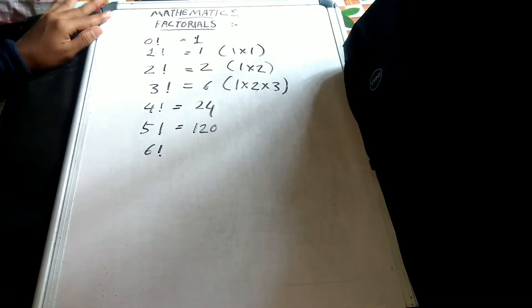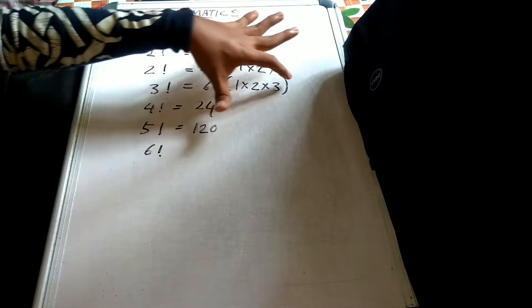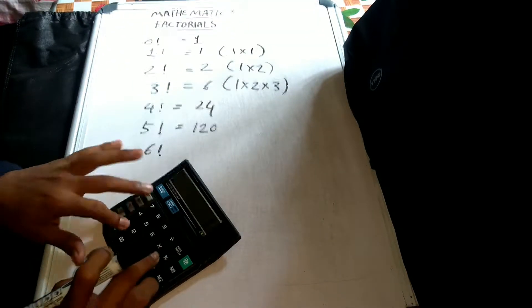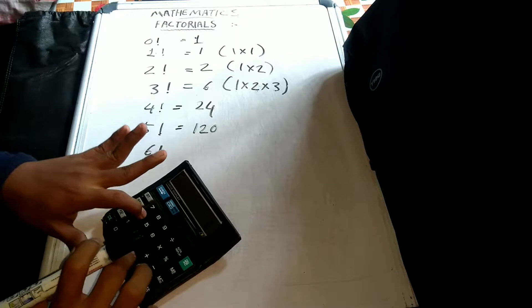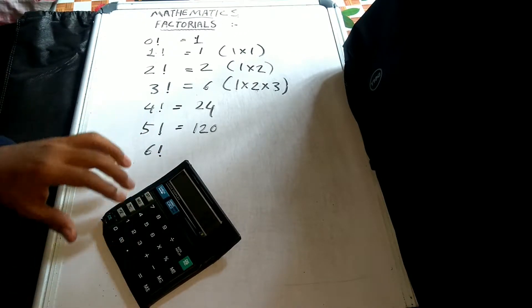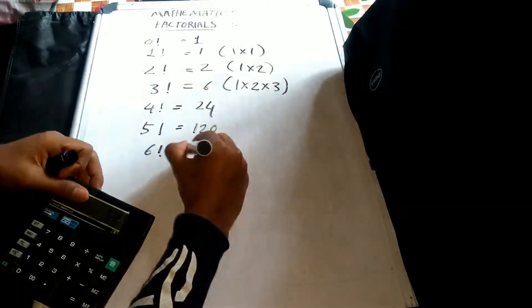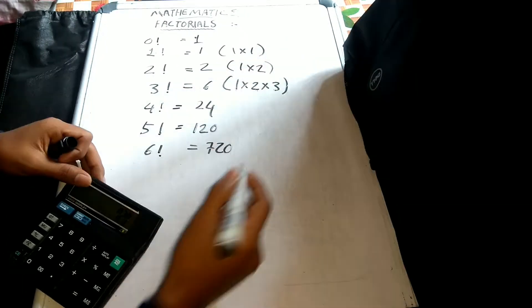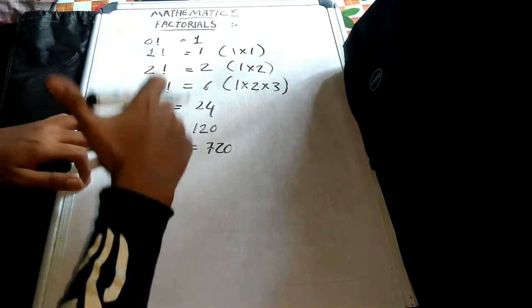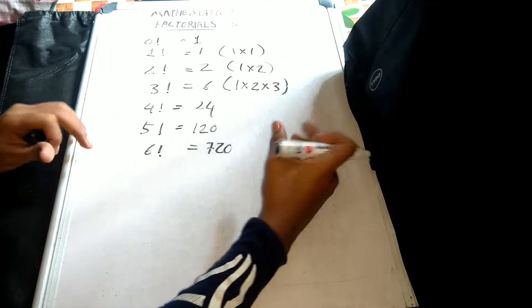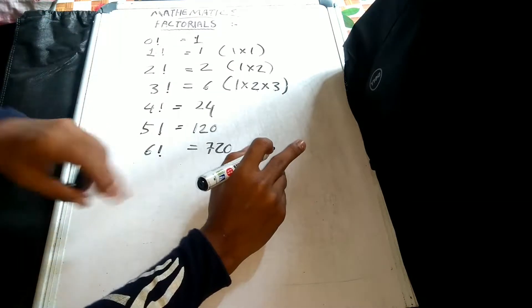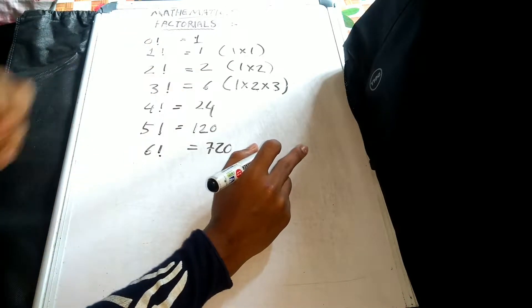5 factorial: 1 into 2 into 3 into 4 into 5. 6 factorial: 1 into 2 into 3 into 4 into 5 into 6. So we have to factorize these.